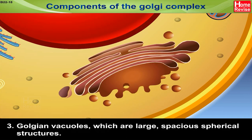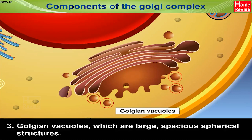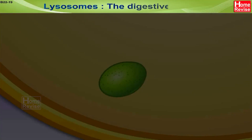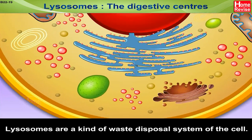3. Golgian Vacuoles, which are large, spacious, spherical structures. 4. Lysosomes — the digestive centers. Lysosomes are a kind of waste disposal system of the cell.